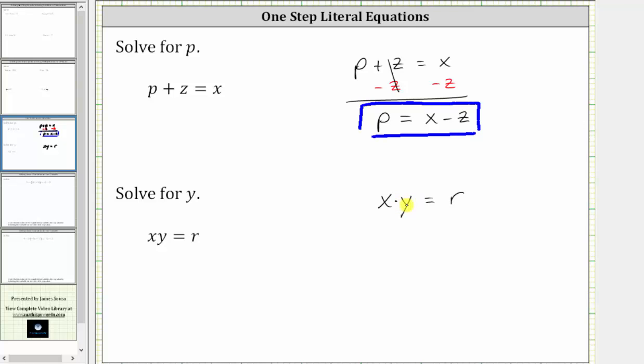The opposite operation of multiplication is division and therefore, to solve for y, we need to divide both sides by x. Simplifying on the left, x divided by x simplifies to one. One times y is y. We have y equals r divided by x.